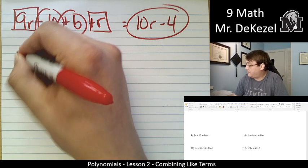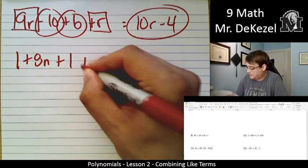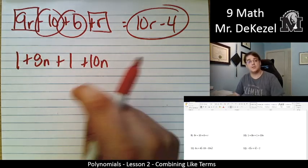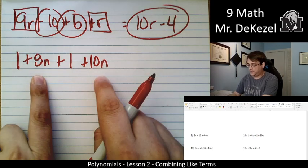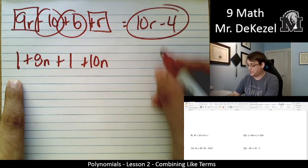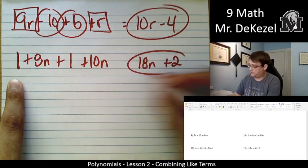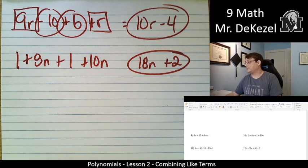Let's go to number 10. 1 plus 8n plus 1 plus 10n. So our variables with the single degree, first degree, can go together and the 0th degree go together. That's 18n plus 2. All right.